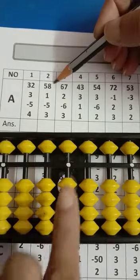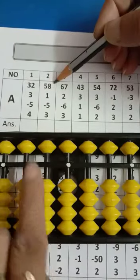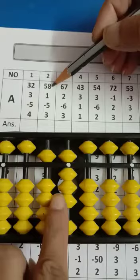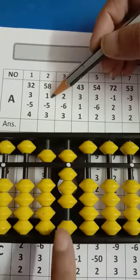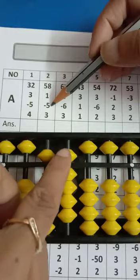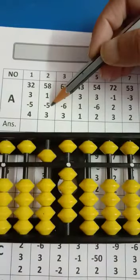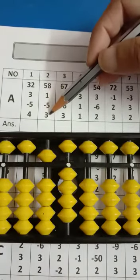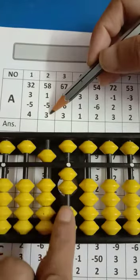58. This is the 1s place and 10s place. Upper bit is 50, then 8. We have 8, add 1. Then minus 3. 1s place upper bit is minus 5, add 3. 3's friend is 2, minus 2, add 5. Answer is 57. Now column B.